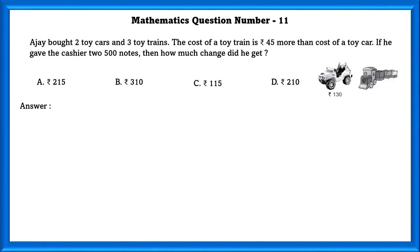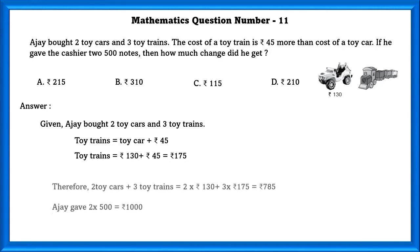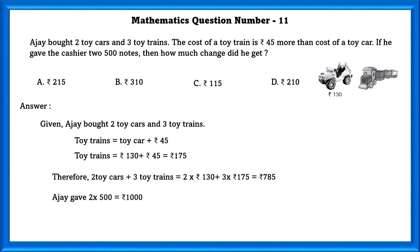Mathematics question number 11. Ajay bought two toy cars and three toy trains. The cost of toy train is 45 rupees more than the cost of a toy car. If he gave the cashier two 500 notes, then how much change did he get? Given, Ajay bought two toy cars and three toy trains. Toy trains is equal to toy car plus 45 rupees. In the picture, we can see that toy car is equal to 130 rupees. So, toy trains is equal to 130 rupees plus 45 rupees, which is equal to 175 rupees. Therefore, two toy cars plus three toy trains is equal to 785.